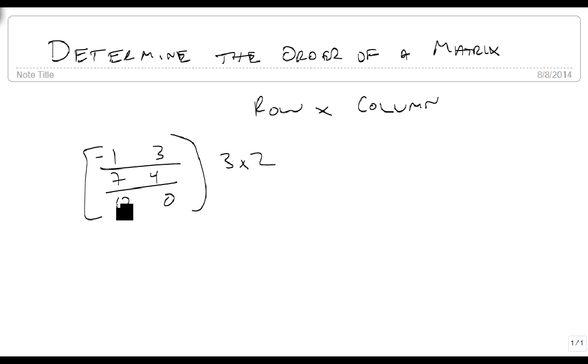because it has 3 rows and 2 columns. If instead I had a 3 minus 8, this would be a 1 by 2, because it has 1 row, and again, 2 columns.